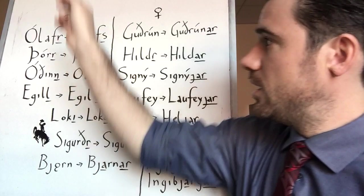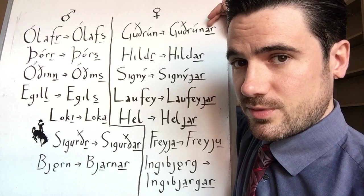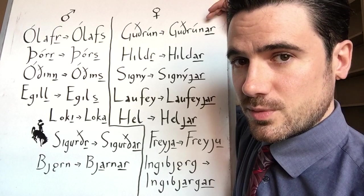The majority form of the possessive form for women's names. Women's names typically don't have the R at the end. And they add AR to form their genitive or possessive form. So from Gudrun to Gudrunar. So if you wanted to say Gudrun's son, it would be Gudrunar son. Gudrun's daughter, Gudrunar daughter.